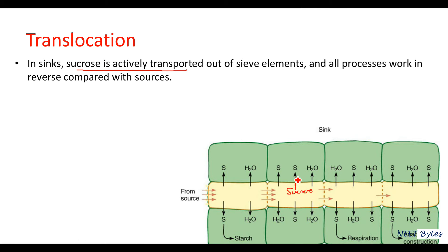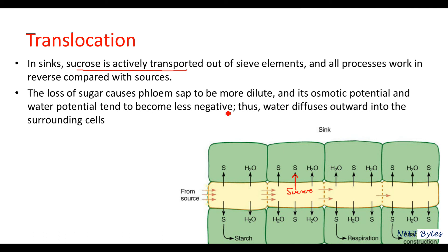That loss of sugar causes phloem sap to be more dilute. Once it becomes more dilute, osmotic potential and water potential tend to become less negative. As a result, water will diffuse out—water will diffuse out because here there is more concentration and here less concentration. Storage cells do not store sucrose; they store it in the form of starch.